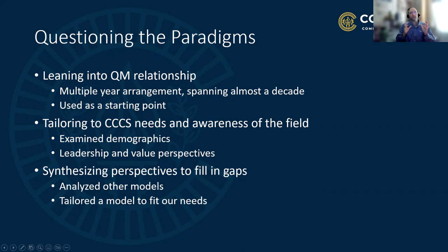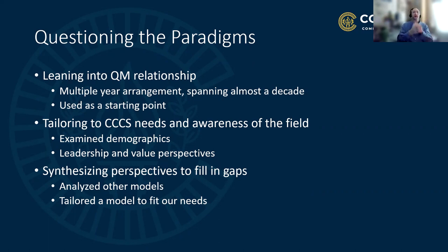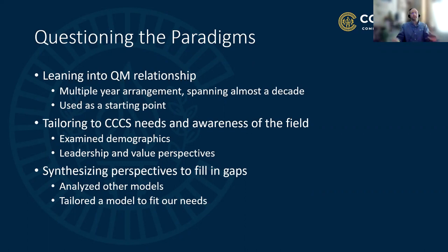What we ended up creating was a tailored model to fit our needs. What fits our needs might not fit your school, so tailoring is a good thing. Universal Design for Learning—UDL—ensures everybody has the same basic needs met, which helps close the equity gap. We grabbed pieces from different models and tailored them to fit our needs. We ended up calling it QM Plus, because we began with the basis of the Quality Matters subscription and then added more to it.